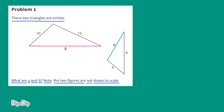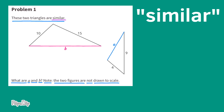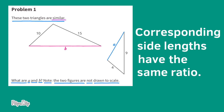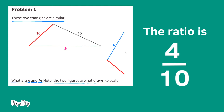We need to find the side lengths for A and B. Since these two triangles are similar, we know that the triangles have the same angle measures, and we also know that the corresponding side lengths have the same ratio. The side length of 4 on the right-hand triangle corresponds to the side length 10 on the triangle on the left. This means that the ratio is 4 tenths, or a ratio of 4 to 10.